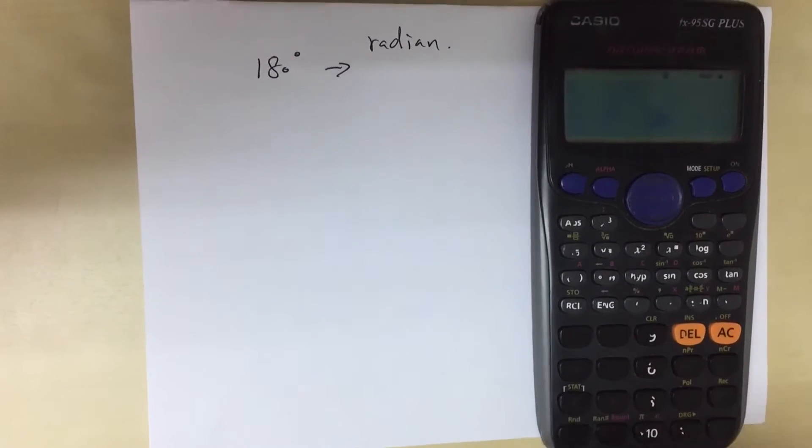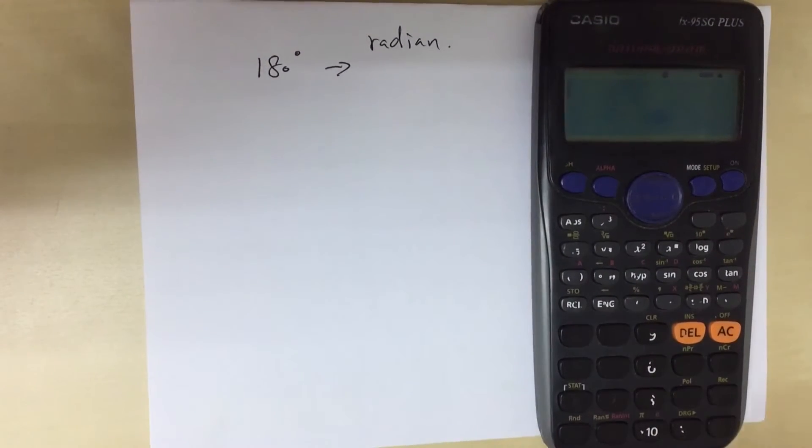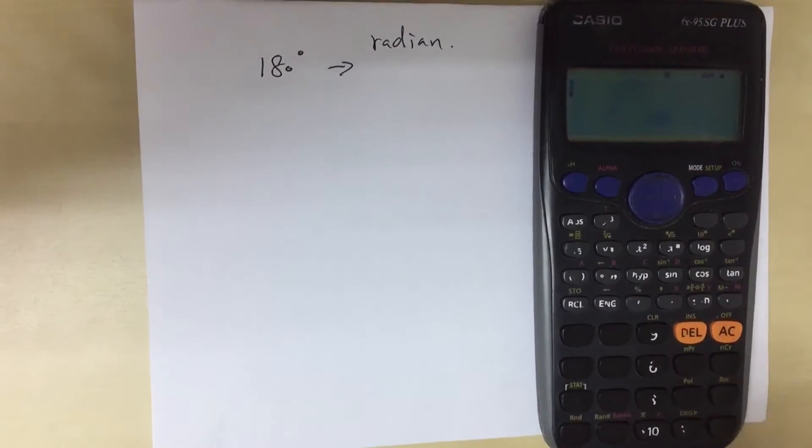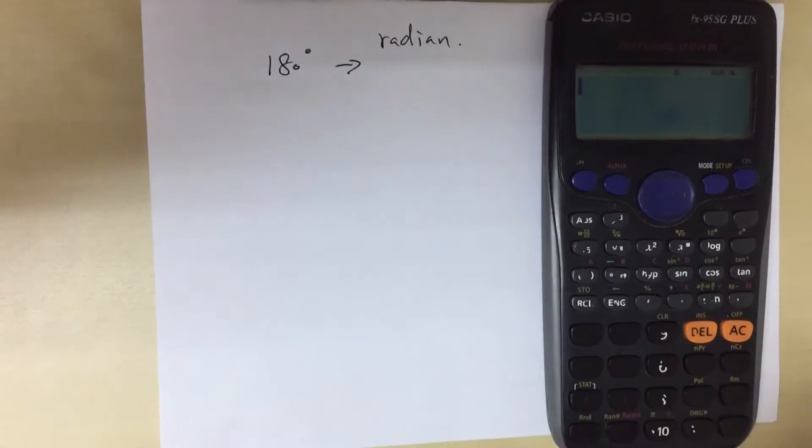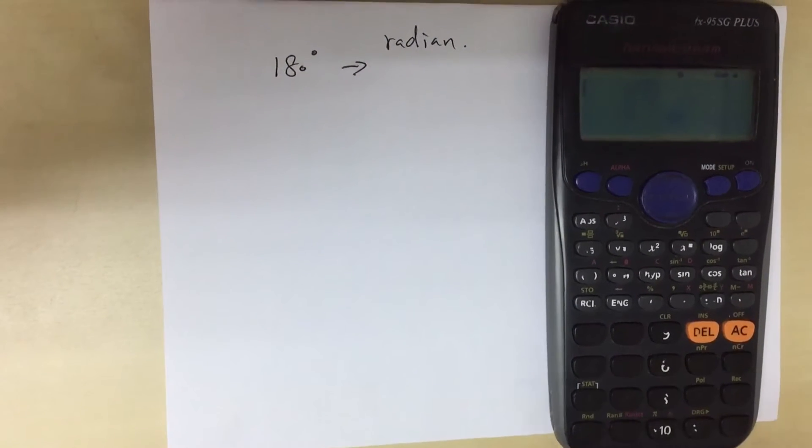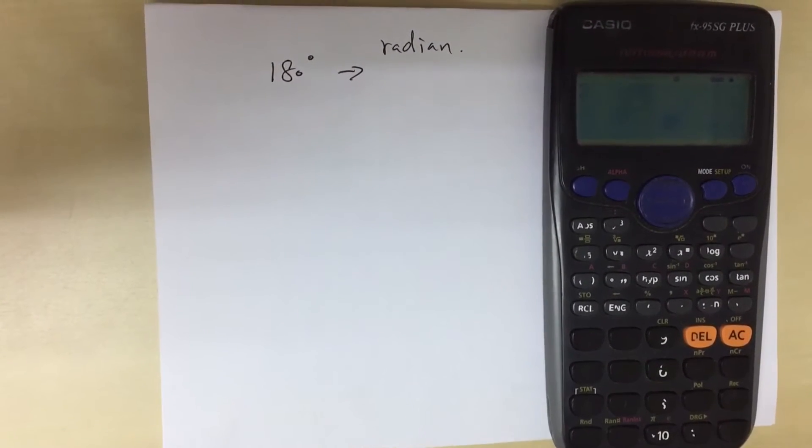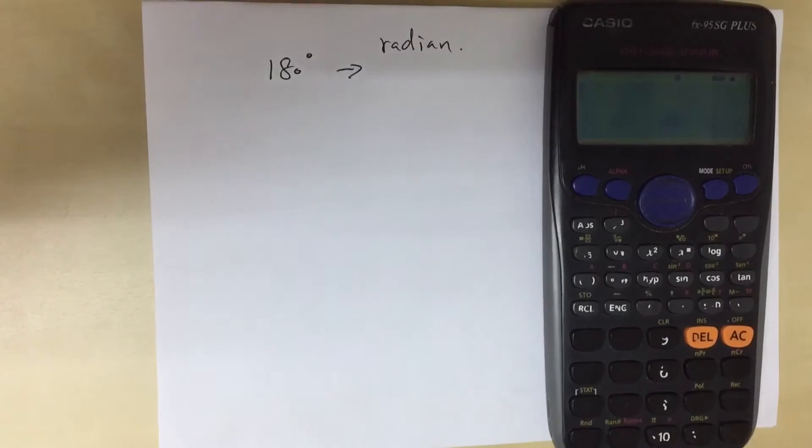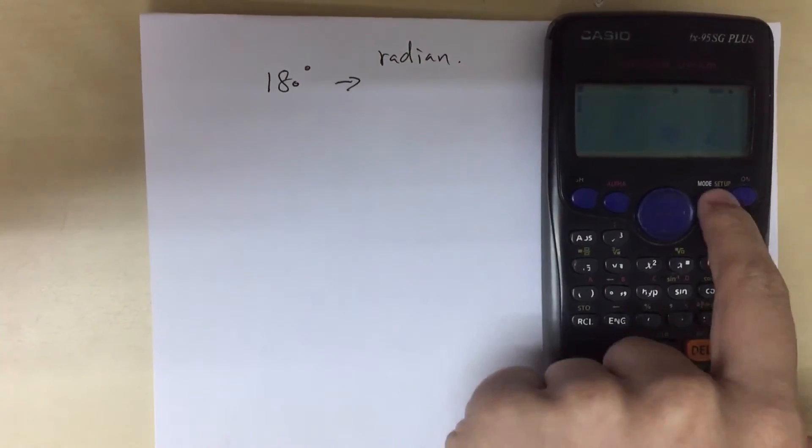As you can see, the calculator is a bit faded with a lot of faded numbers, but it shouldn't be a problem. To convert to radian mode, you need to do some simple setup. First, change your calculator to radian mode by pressing shift setup.